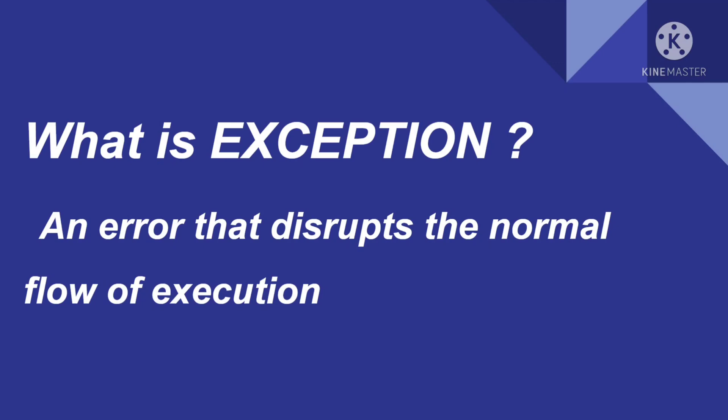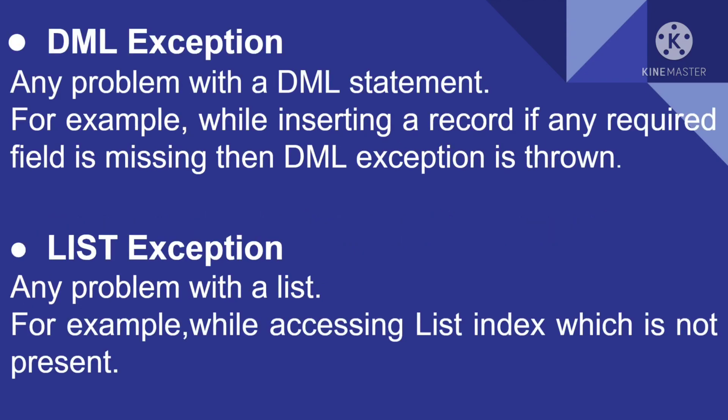The first type is DML Exception. As its name suggests, any problem with a DML statement will cause a DML exception. For example, while inserting a record, if any required field is missing, a DML exception is thrown. If we are entering data manually and a field is required on a page layout, we can enter it manually, but if we are creating or updating records using code or automation and that field is missing, this exception will occur.